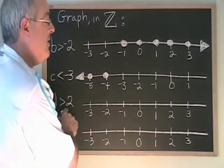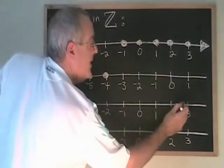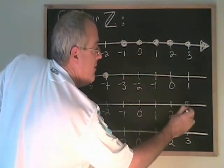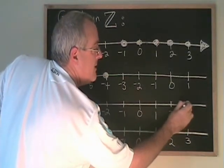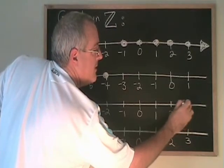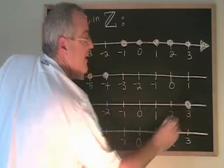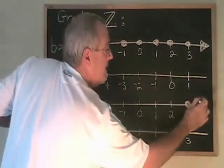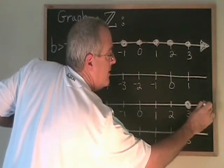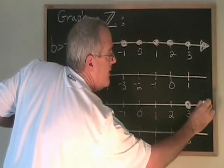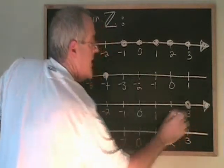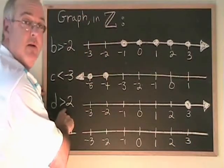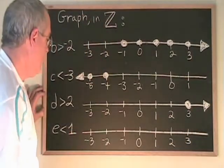D greater than 2. The integers greater than 2 are the same as the natural numbers that are greater than 2. They start with 3 and go on and on in the positive direction. And 2 itself is not part of the answer — it is not greater than itself.